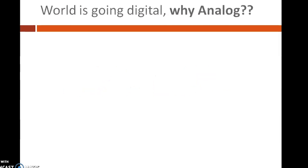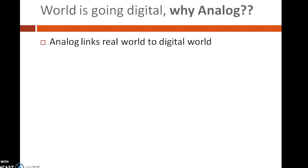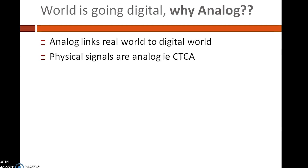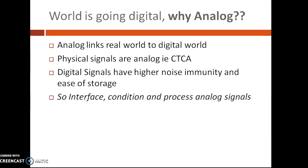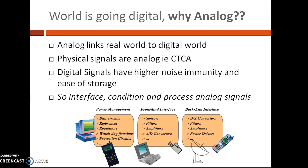Now, let me ask you this question: the world is going digital — why analog? Because analog links the real world to the digital world. Physical signals are analog in nature. Digital signals have higher noise immunity and ease of storage. So we need to interface, condition, and process analog signals.